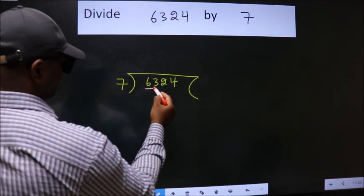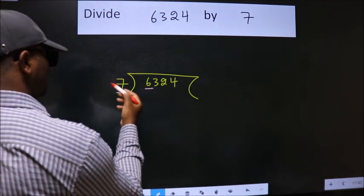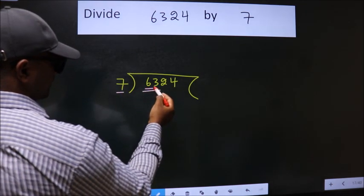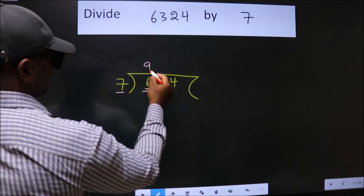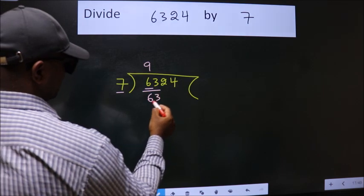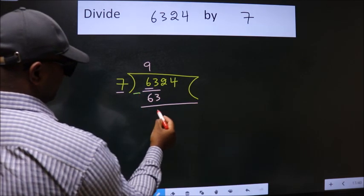Here we have 6. Here 7. 6 is smaller than 7, so we should take 2 numbers: 63. When do we get 63 in 7 table? 7 nines, 63. Now we should subtract. We get 0.